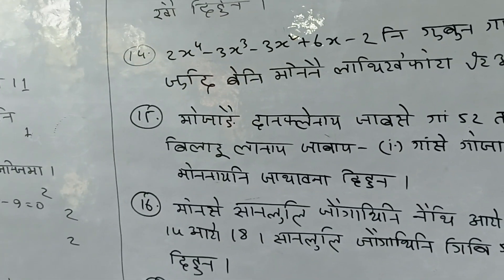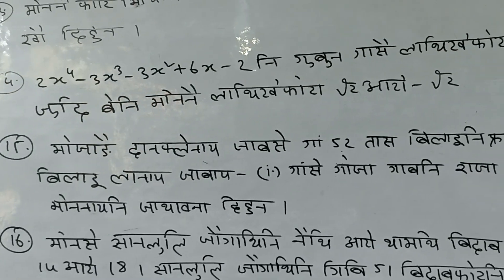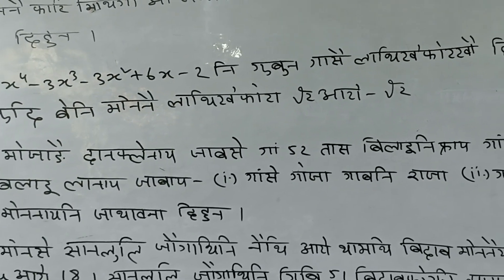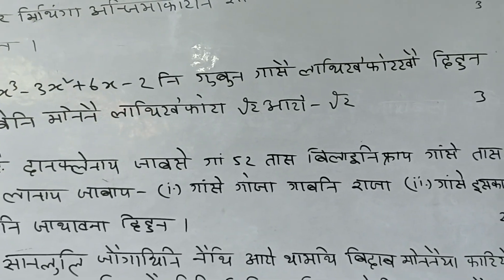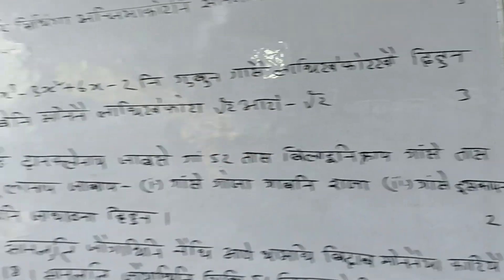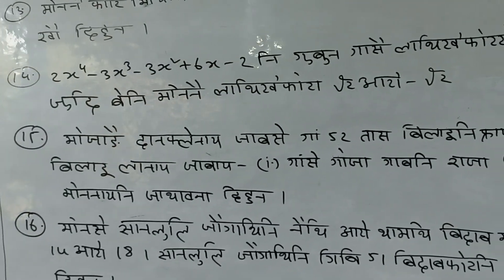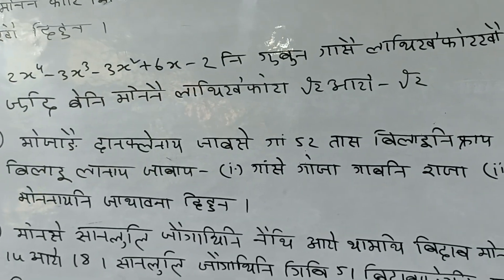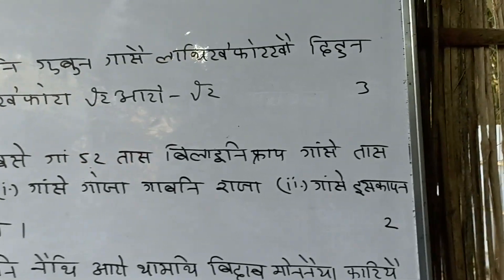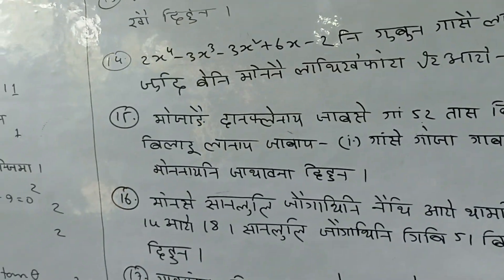Number 15: From the given information about a gang and a timetable, find the relationship. Number 1: Find the total count of the gang. Number 2: Find when the gang cannot give a certain item.